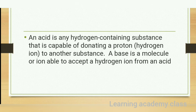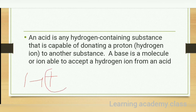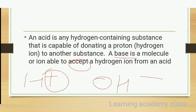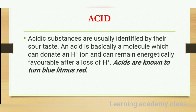As we know, acid donates the H+ ion, and base accepts that hydrogen ion, so it has an OH- ion. It's all about hydrogen ions. So let's move on — what is acid? Acid substances are usually identified by their sour taste as a characteristic.